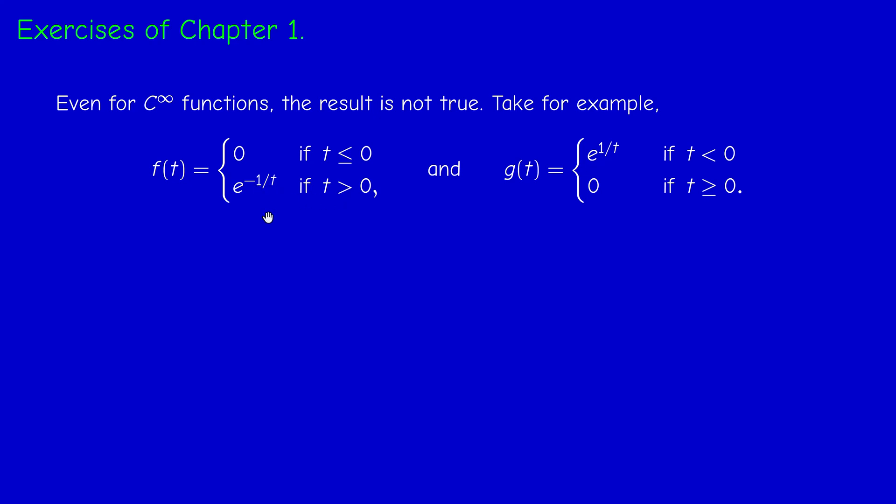And we observed that it's actually C infinity, and all the derivatives at zero are zero. And this is something that you can check. If you want to prove that, you can use induction. So you can prove by induction that F is of class C^n, because the only problem is at zero.